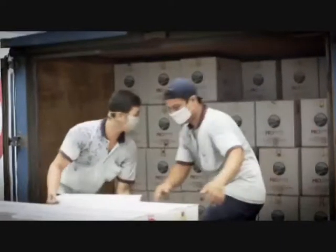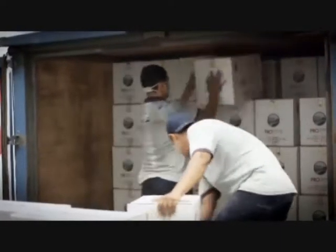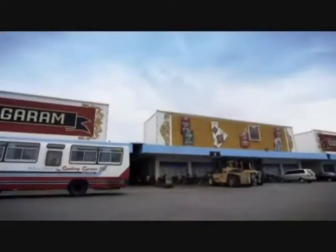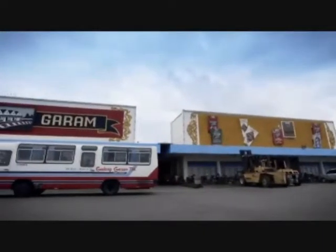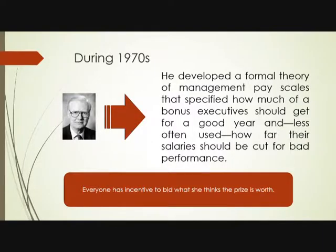During the 1970s, James developed a formal theory of management pay scales that specified how much of a bonus an executive should receive for a good year, and how much their salaries should be cut for bad performance.